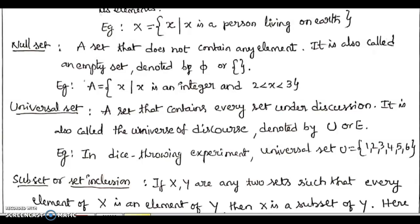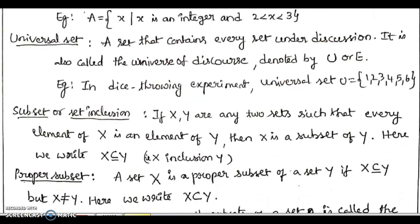Next, coming to the universal set. A set which contains all the sets under discussion is called the universal set. Sometimes it can also be called the universe of discourse, and it is denoted by the capital letter U or E. For example, in a die throwing experiment, the universal set U equals the set of numbers 1, 2, 3, 4, 5, and 6.